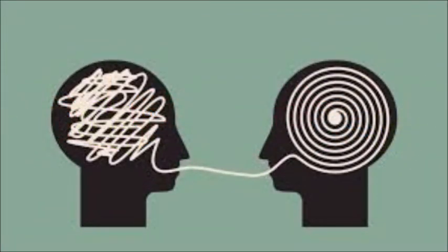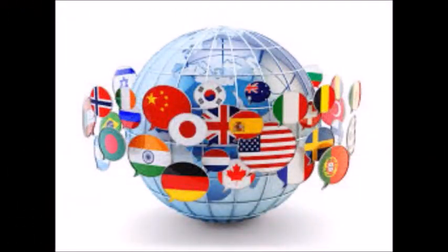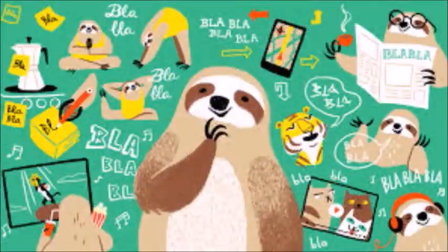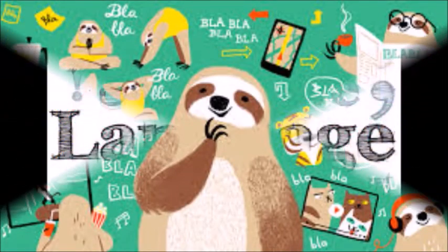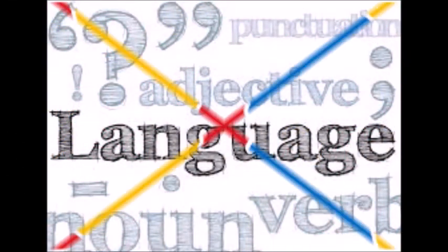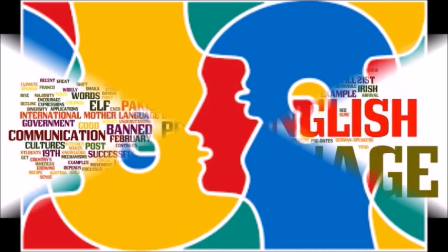Distinction between syntax and the other branches of language study. Dr. Johnson's Dictionary defines grammar as the art of using words properly, and comprises four parts: orthography, etymology, syntax, and prosody.